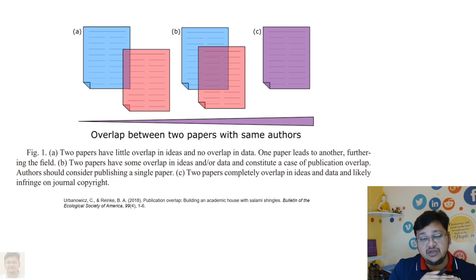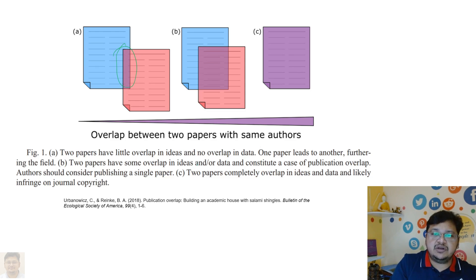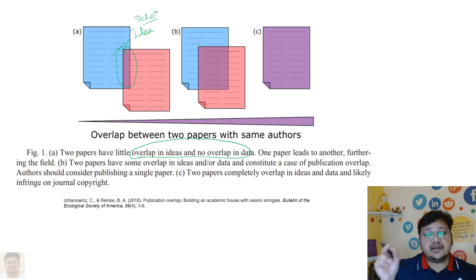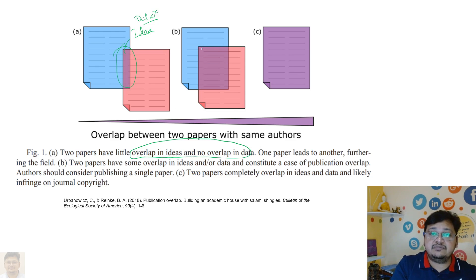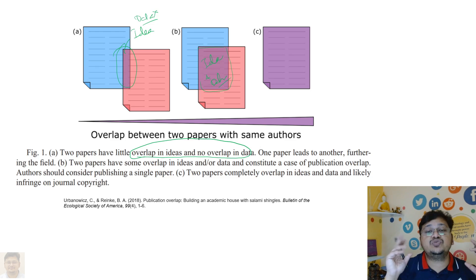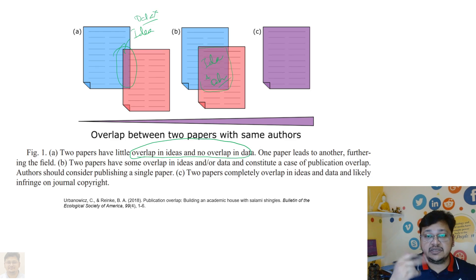Here we'll understand three cases. In the first case — two papers by the same author — the overlap is very minimal. Only the idea overlaps and there is no overlap in the data. Idea overlapping is there but data overlapping is not, so it is kind of okay, but the author still has to give proper credit and citation to avoid misconduct. The second category shows much more overlap — about 60 to 75 percent — where both the idea and the data are overlapped.